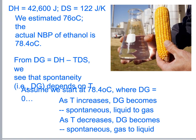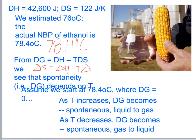We estimated 76°C for the normal boiling point of ethanol, and the actual value is 78.4°C — a good estimate.